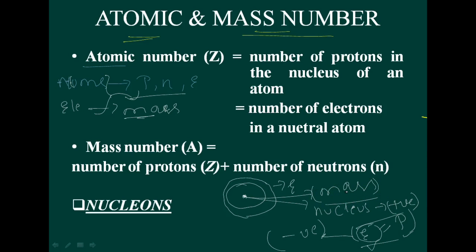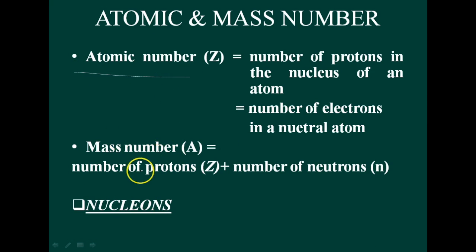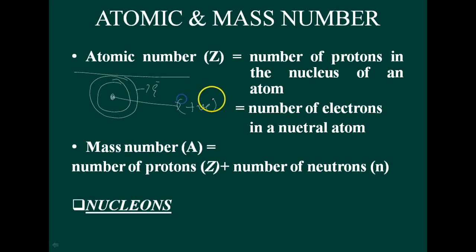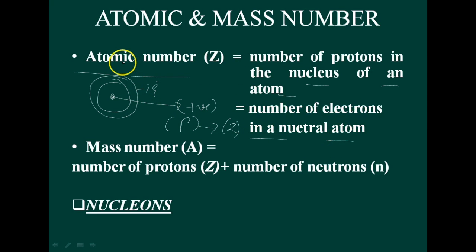The charge on the proton is equal but opposite to that of the electron. The number of protons present in the nucleus of an atom is called the atomic number, which is represented by Z. So the number of protons in the nucleus of an atom — or equivalently the number of electrons in a neutral atom — is called the atomic number.